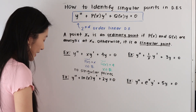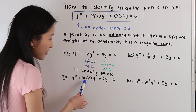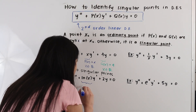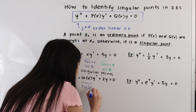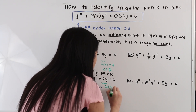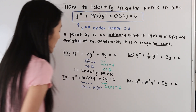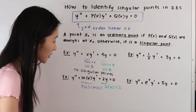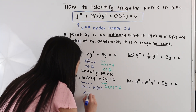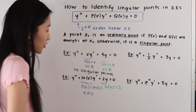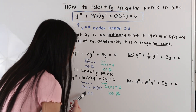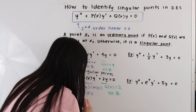Now let's take a look at this next example. We have y double prime plus ln of x times y prime plus 2y is equal to zero. Here p of x is equal to the natural log of x and q of x is equal to 2. We know from the graph of ln of x that we have a discontinuity at x equals zero — there is a vertical asymptote there, so x cannot equal zero. Since q of x is defined for all real numbers but p of x has a discontinuity at x equals zero, we have a singular point at x equals zero.